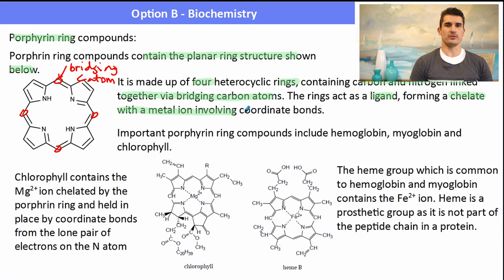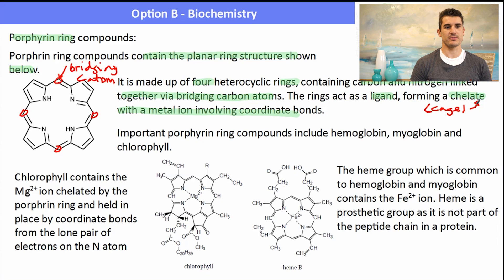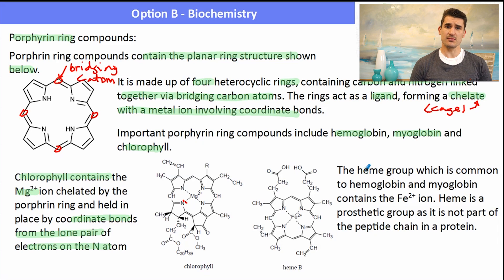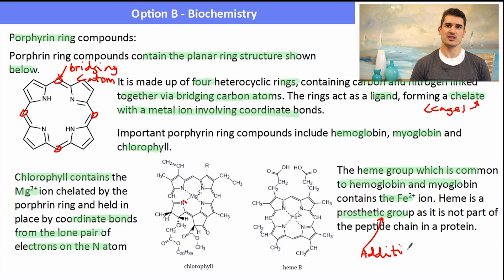Important porphyrin ring compounds include hemoglobin, myoglobin, and chlorophyll. Chlorophyll contains the Mg²⁺ ion, which sits inside the chelate cage held by coordinate bonds from nitrogen lone pairs. The heme group, common to both hemoglobin and myoglobin, contains an Fe²⁺ ion and is called a prosthetic group because it is not part of the peptide chain itself — it is an additional component held in place by the protein chain.